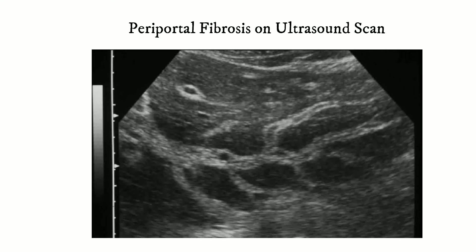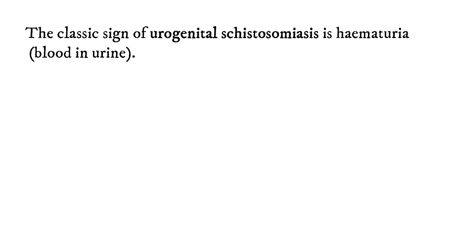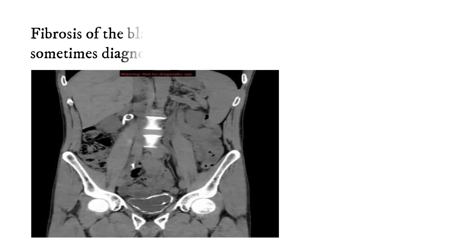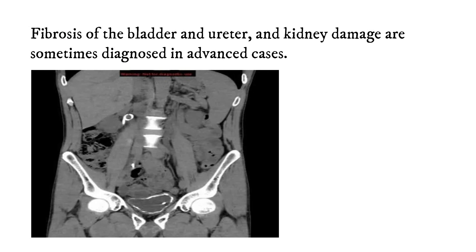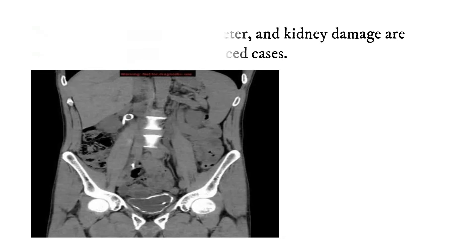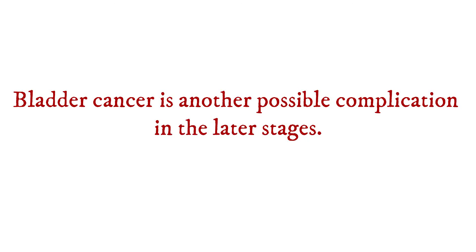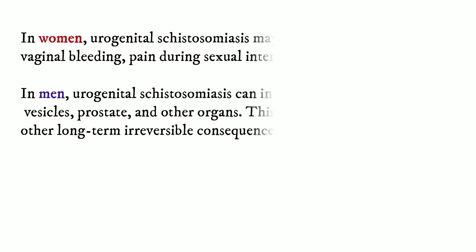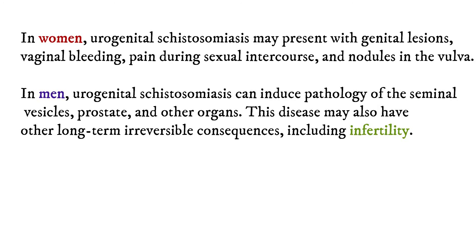Here you can see a periportal fibrosis on an ultrasound scan. The classic sign of urogenital schistosomiasis is hematuria, which is blood in the urine. Fibrosis of the bladder and the ureter, as well as kidney damage, are sometimes diagnosed in advanced cases. Bladder cancer is another possible complication in the later stages. In women, urogenital schistosomiasis may present with genital lesions, vaginal bleeding, and pain during sexual intercourse and nodules in the vulva.